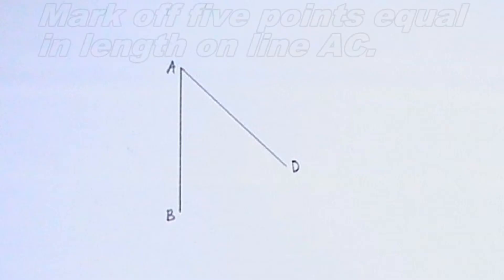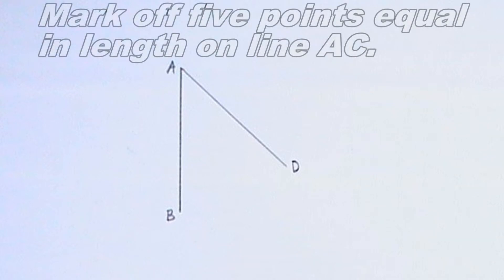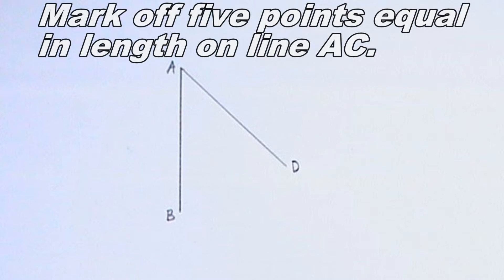In this video, I will divide line AB in a ratio of 2 is to 3. So, I will mark off 5 points equal in length on line AC, because 2 plus 3 is equal to 5. I will mark off 5 points of length 10mm each. I will do this using my compass.